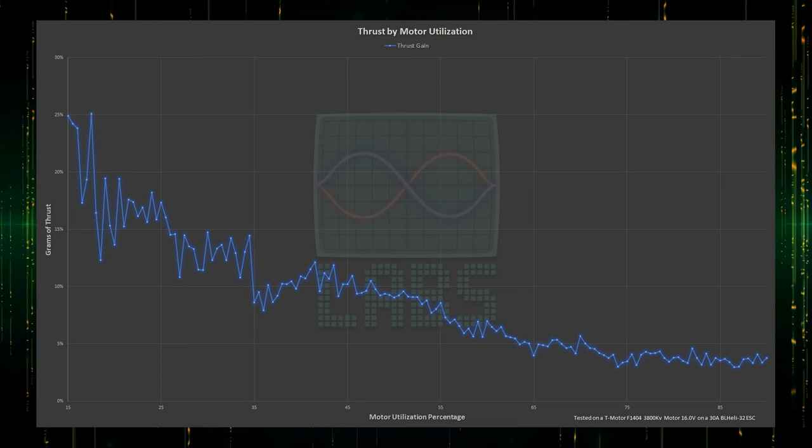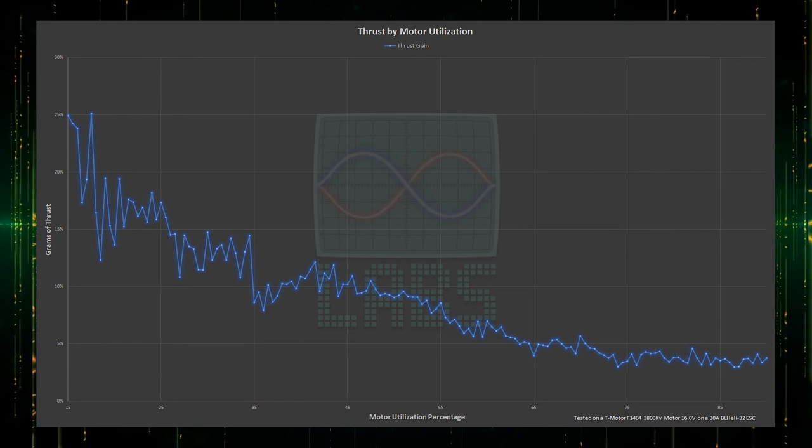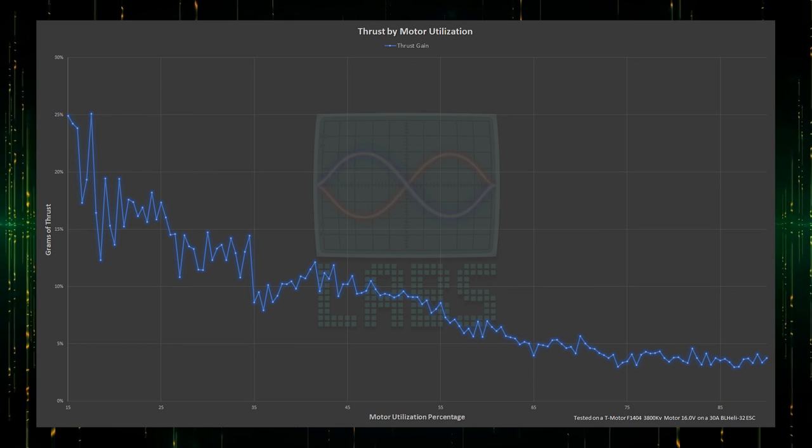Looking at the percentage of additional thrust, it generates 25% more thrust at the low end, which decreases until it hits about 4% at about 70% throttle.